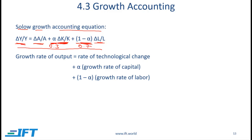If capital changes by 1% and all else remains the same, then the percentage change in output will be 0.3%. So a 1% change in capital with everything else constant leads to a 0.3% change in output. In that sense, alpha can be thought of as an elasticity with respect to capital. Similarly, 1-alpha can be thought of as an elasticity with respect to labor.